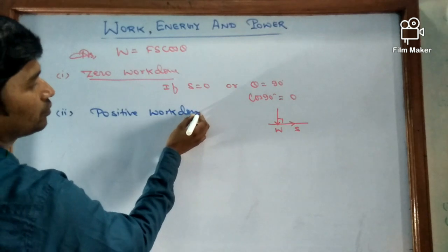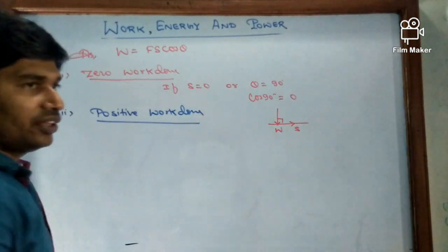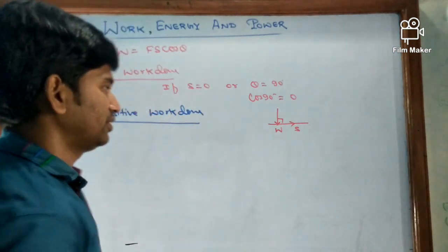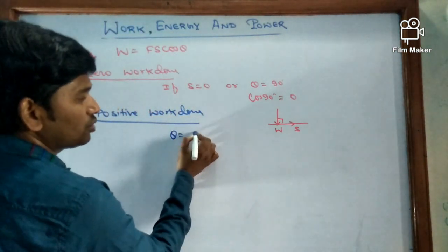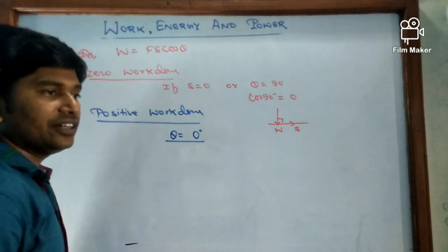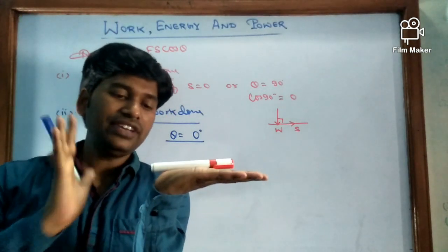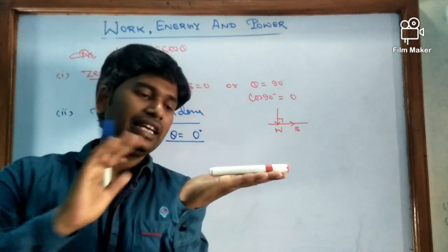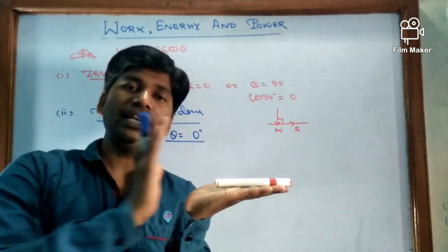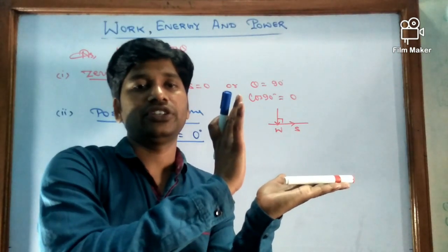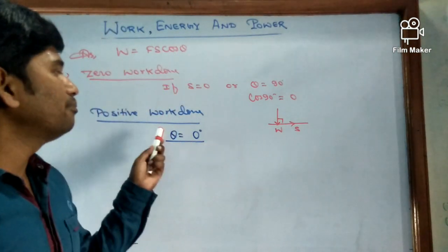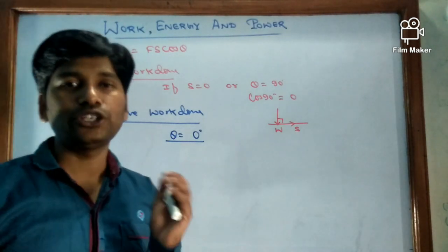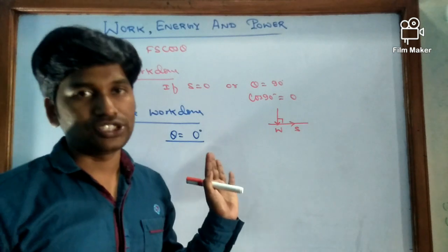For positive work done: the force and displacement are in the same direction, that is θ = 0°. For example, if an object is placed on a horizontal surface and we apply a force causing it to move in the same direction as the force, work done is positive. More generally, if the angle θ is an acute angle, work done will also be positive.